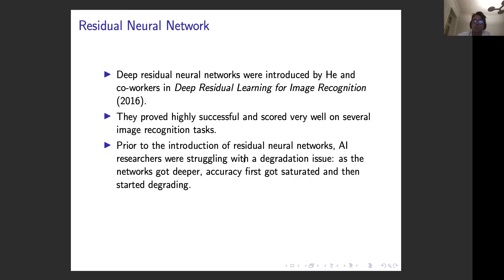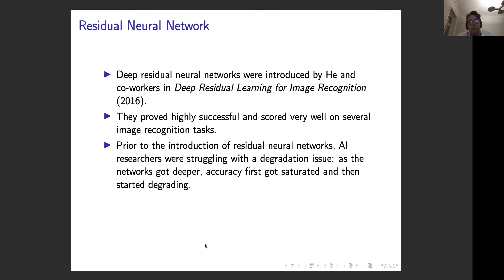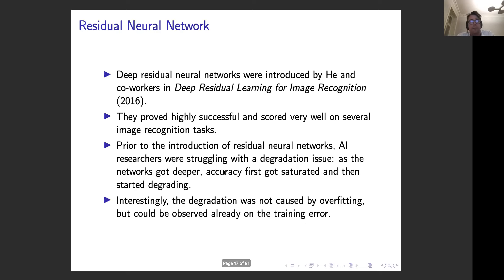One issue the community had been struggling with prior to residual networks was a degradation of accuracy. For some time it looked like making the network a bit deeper made results better, but that held up to a point — after a while, as networks got even deeper, accuracy saturated and then started degrading. At some point the quality of fits actually got worse and worse the deeper the network became.